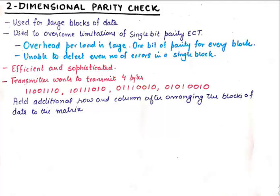As mentioned, it is used for large blocks of data — these could be numerous bytes, hundreds and hundreds of bytes. For this big block of data, we simply need to add one more row and one more column after arranging that data in the form of a matrix. So the overhead per payload of the data becomes smaller and smaller as we increase the block size.